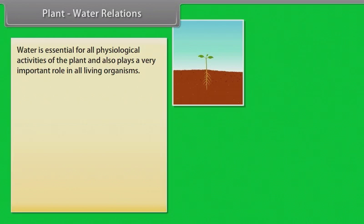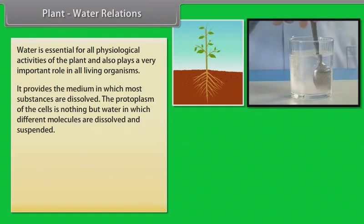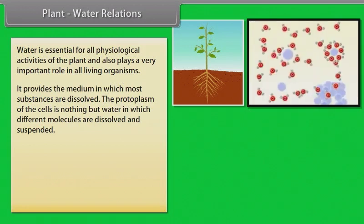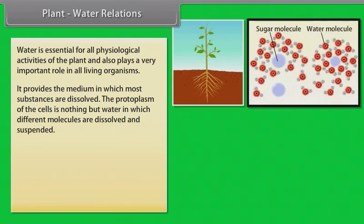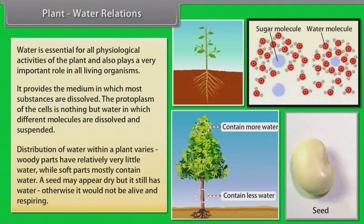Water is essential for all physiological activities of the plant and also plays a very important role in all living organisms. It provides the medium in which most substances are dissolved. The protoplasm of the cells is nothing but water in which different molecules are dissolved and suspended. A watermelon has over 92% water. Most herbaceous plants have only about 10–15% of their fresh weight as dry matter. Distribution of water within a plant varies — woody parts have relatively very little water, while soft parts mostly contain water. A seed may appear dry, but it still has water; otherwise it would not be alive and respiring.